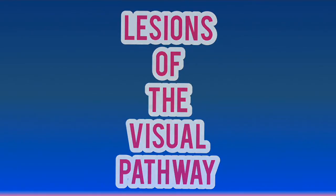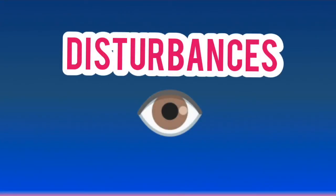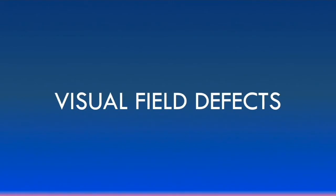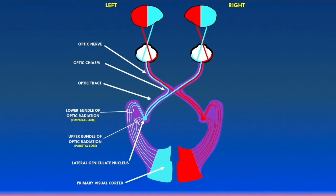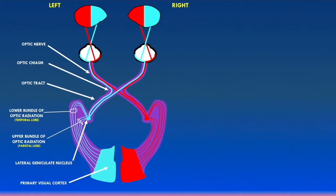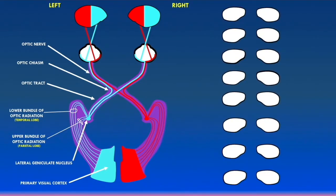Lesions of the visual pathway can lead to visual disturbances or even visual loss. Let's go over the basics of visual field defects. In the previous video we went over the basics of the visual pathway — I highly recommend watching that before this video, as it will help you better understand the visual field defects discussed here. We're going to discuss eight different types of visual field defects using a diagram of the visual pathway.